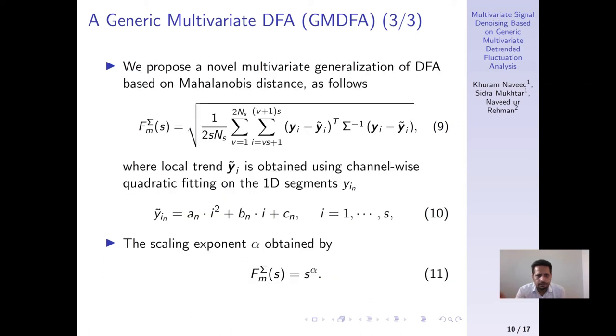Based on the discussion before, we now propose a generic multivariate detrended fluctuation analysis based on Mahalanobis distance. We develop this novel root mean square function given in equation 9 based on Mahalanobis distance that is subsequently used to obtain the scaling exponent in equation 11.